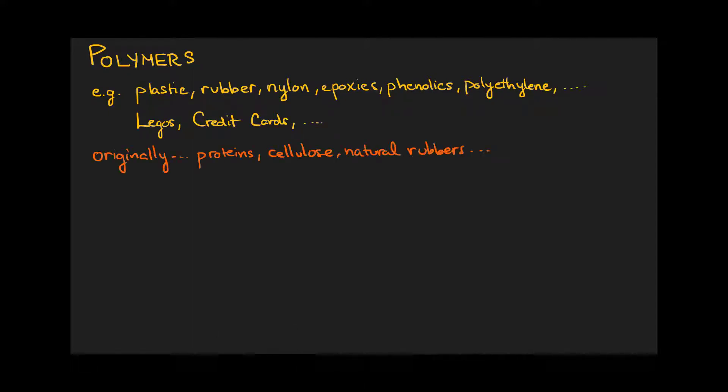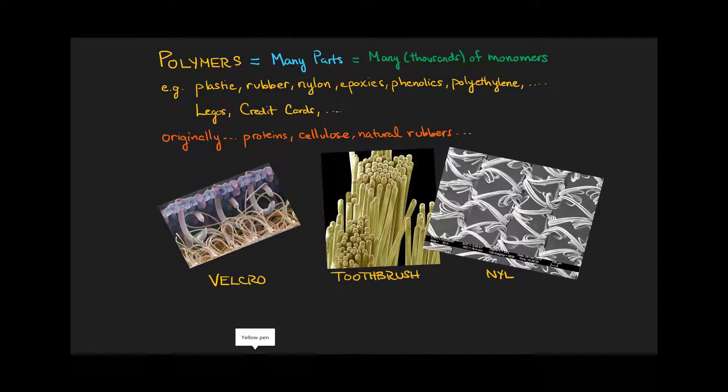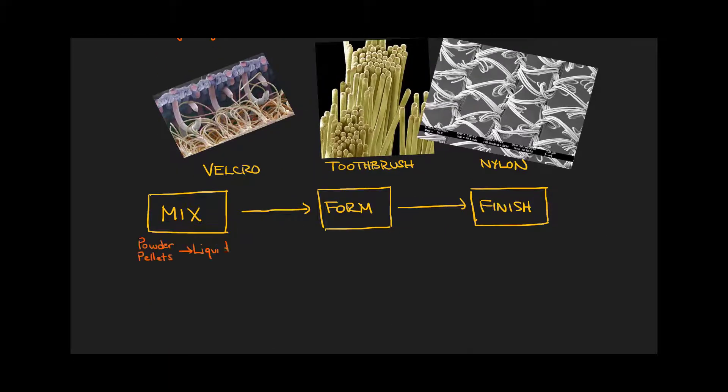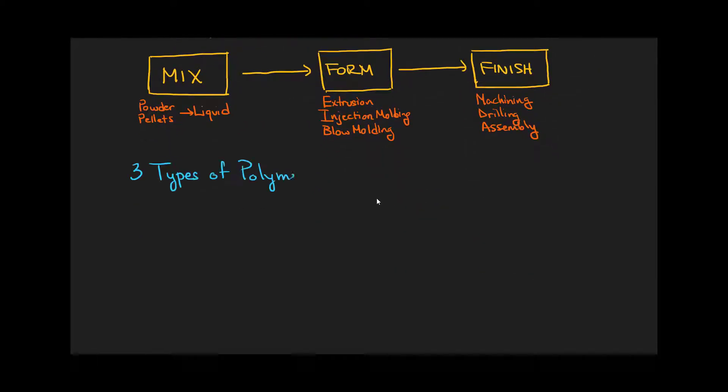Before we go into how to make them, let's talk about what they're made of. These are made of many thousands of meres, of parts, of monomers, of little tiny strands that need to coalesce in different ways as we make them out of our mix-form-finish processing technique.